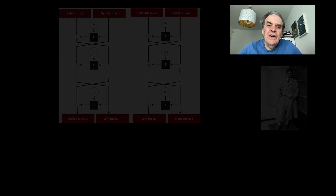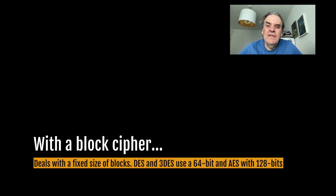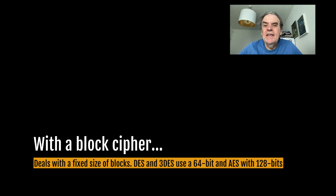With a block cipher we only have to deal with a fixed size of blocks. DES and 3DES use a 64-bit or 8-byte block size and AES uses a 128-bit block size or 16 bytes. With symmetric key methods we have block ciphers such as DES, AES-CBC, AES-ECB, or stream ciphers such as ChaCha20 and RC4.